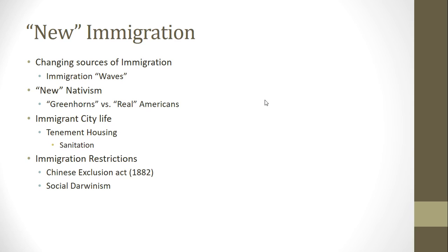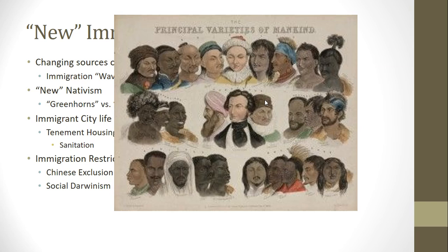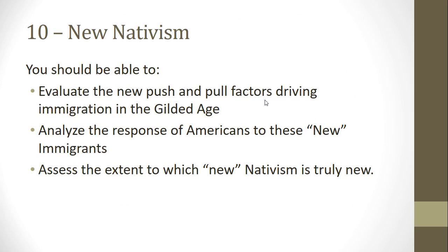Pseudoscientific nonsense like social Darwinism was used to talk about certain races being superior and other races being inferior, and we should exclude the inferior races. As always with these racial hierarchies, the whiter you are, the better. All of this was used to justify pretty racist policies. So that brings us to the end of new nativism. Hopefully you can respond to these things in some detail. When we come back, we'll finish out our unit with the rise of the Populist Party and American politics being restructured again, setting up the stage for the Progressive Era next unit.